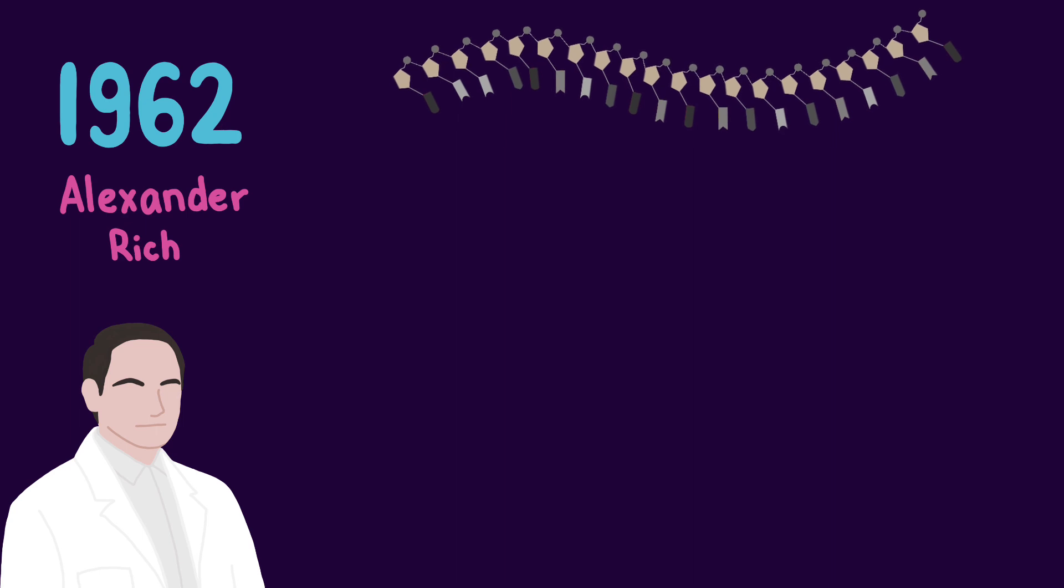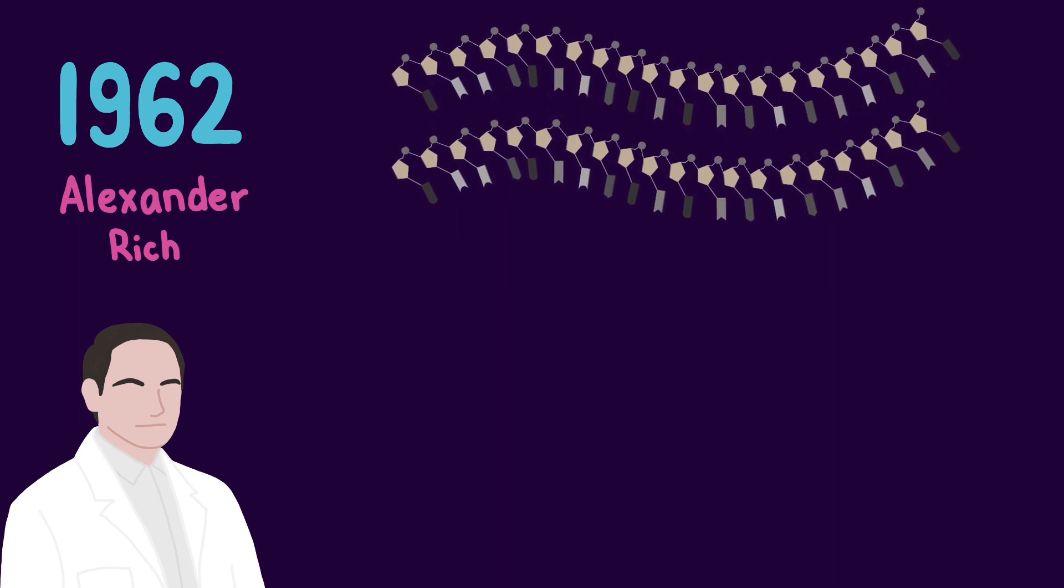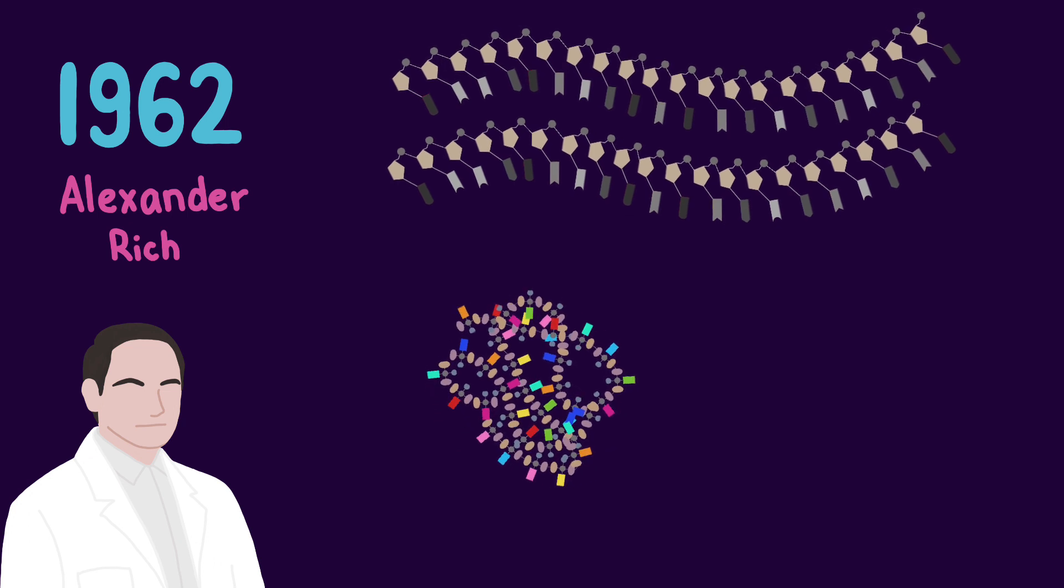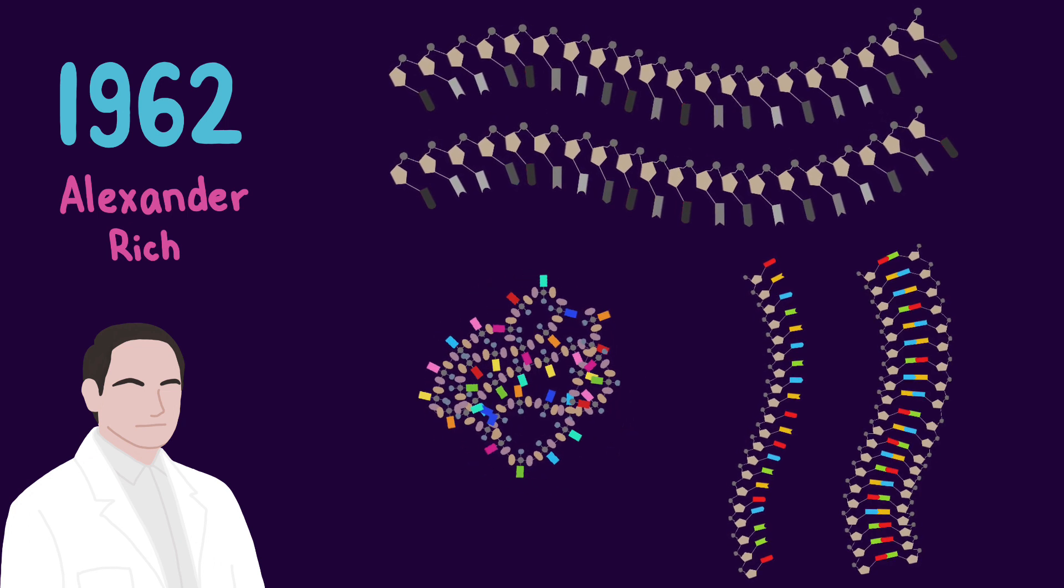In 1962, Alexander Rich proposed that an RNA-like polymer capable of self-replication and able to organize amino acids into proteins was the first polynucleotide molecule that gave rise to RNA and DNA.